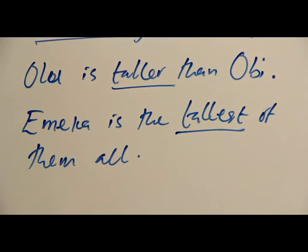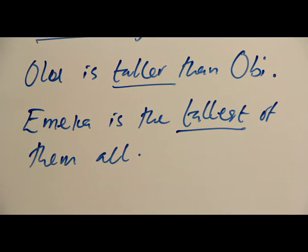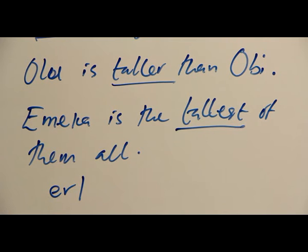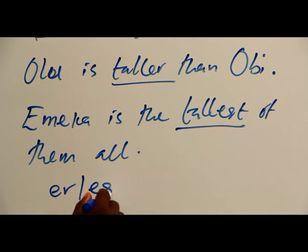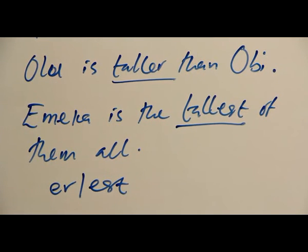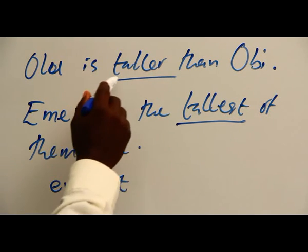Now, of course, without the base form — for example, we can say Olu is tall. Tall is the base adjective with its comparative and superlative forms. There are rules on this. You can see that we use ER and EST for words that have one syllable — so tall is one syllable.